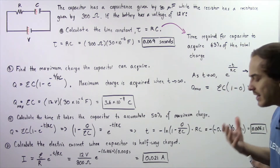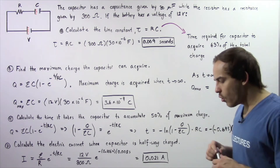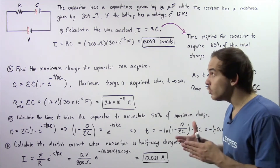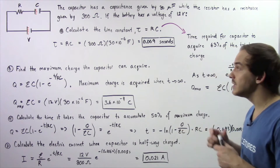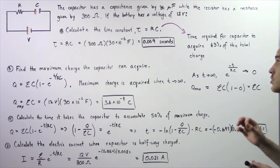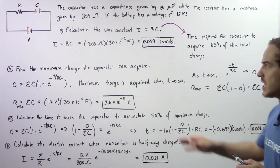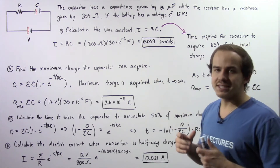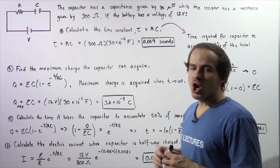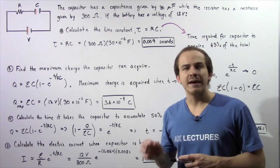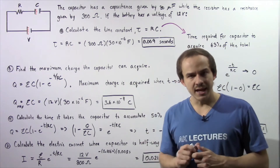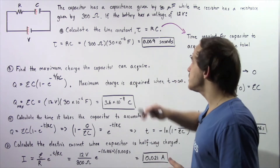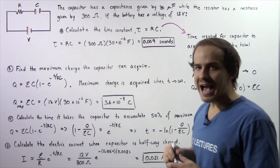Now if the electromotive force — if the voltage difference on the battery is 12 volts — in part A, we want to calculate what the time constant is, which is given by tau.